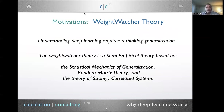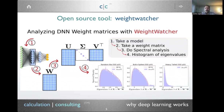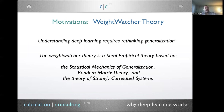The tool is called WeightWatcher. It's an open source tool that analyzes the weight matrices of deep neural networks — it's a diagnostic tool. If you're training a deep neural network, it looks at the weight matrices of the pre-trained model and analyzes them. You take each weight matrix from each layer, do spectral analysis — compute the eigenvalues or singular values — look at the histograms, and it turns out there's a tremendous amount of information in these eigenvalue histograms about the learning and generalization properties. We're not looking at training or test data — purely at the weight matrices.